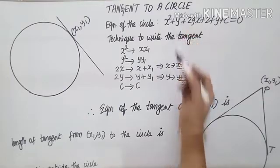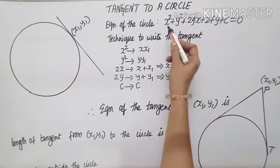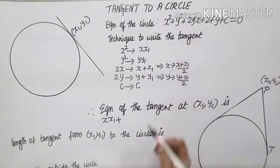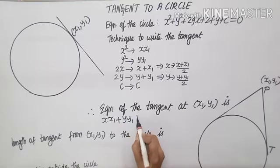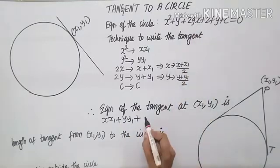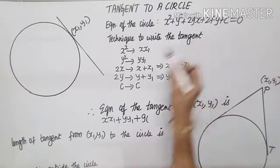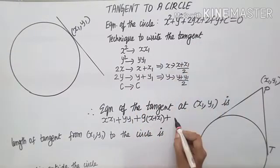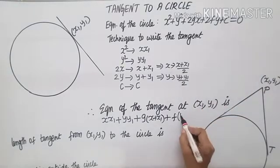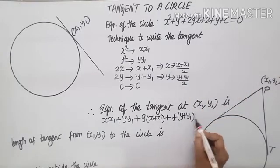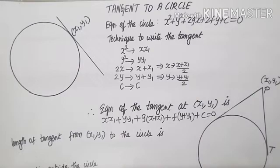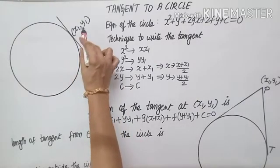Using this technique, write the equation for this circle. x square will become x·x1, y square will become y·y1. 2x is there — keep g as it is, 2x will become x plus x1. Keep f as it is, 2y will become y plus y1, plus constant as it is, equals to 0. And this is the equation of the tangent at the point x1, y1.